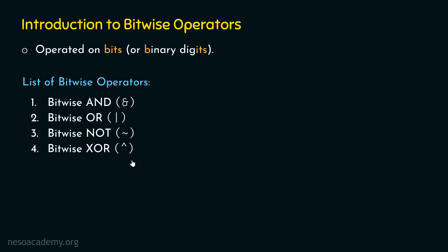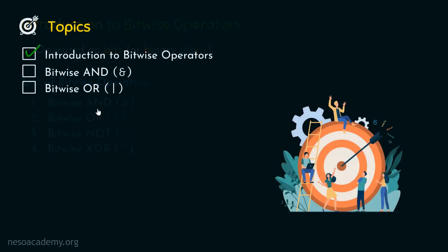Now we need to discuss these bitwise operators one by one. In this presentation, we will understand the bitwise AND operator and the bitwise OR operator. In the next presentation, we will understand the bitwise NOT operator and the bitwise EXOR operator. Without any further delay, let's understand what is the bitwise AND operator.